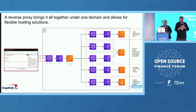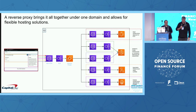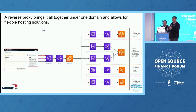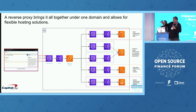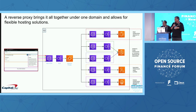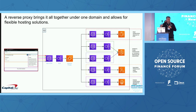Then we get to how we make this more federated. That reverse proxy brings it all together under one domain and allows for very flexible hosting solutions. Capital One is all in on the cloud, so I'm going to focus on AWS here — though you wouldn't be limited to AWS. This is showing that I can host the shell infrastructure on ECS, the header and footer on EKS, an application could be a Lambda, and sidebars hosted on Fargate. In practice, usually teams will pick one, but we do have the capability to host however it makes sense for our federated teams.